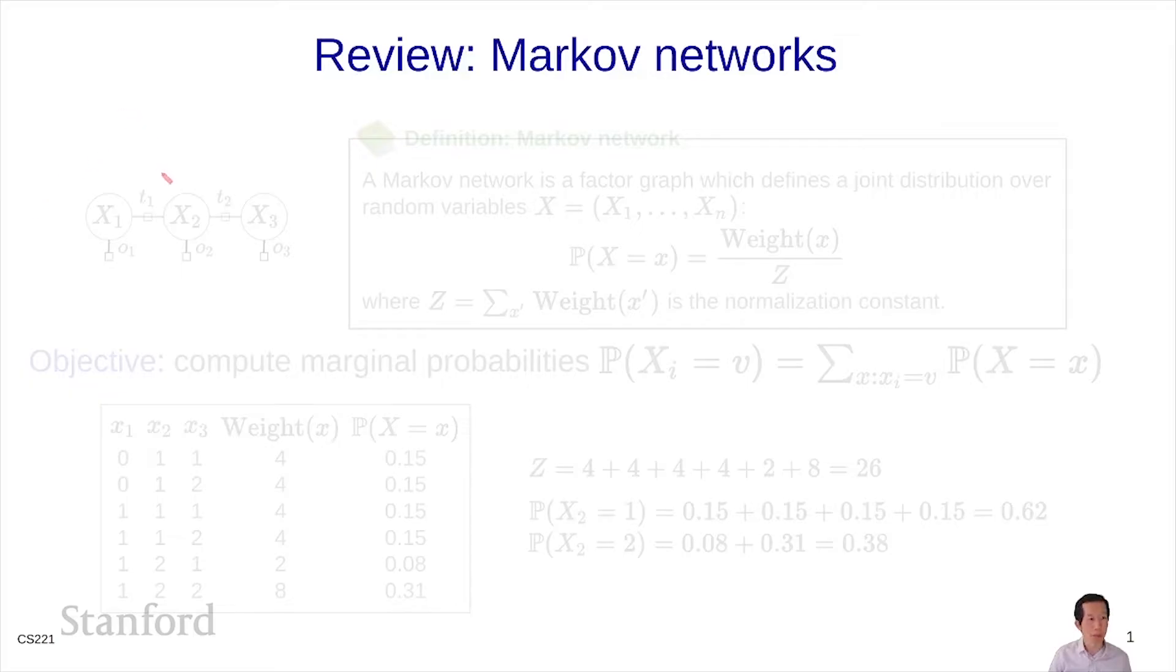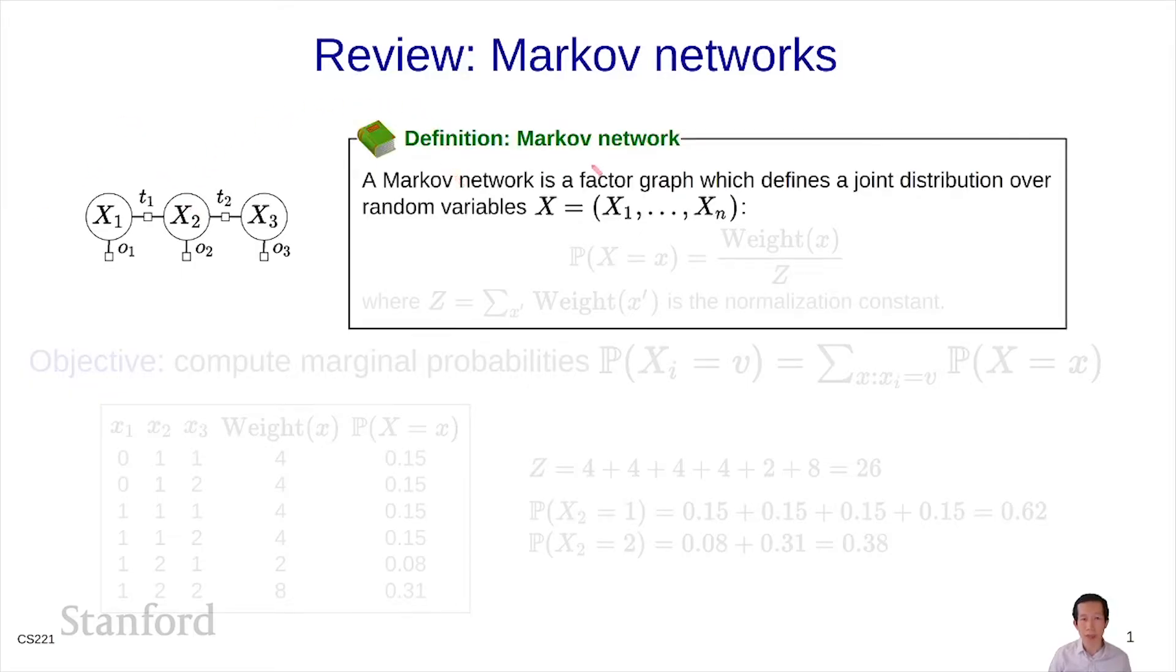Recall that a Markov network is based on a factor graph, and a factor graph gives a weight to every possible assignment of variables in that factor graph. A Markov network will convert that weight into a probability by first computing the normalization constant, which is the sum over all the assignments of the weight of that assignment. Divide by that normalization constant, and we get the probability of assignment little x.